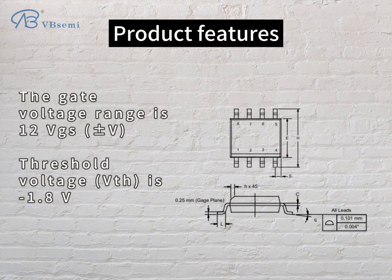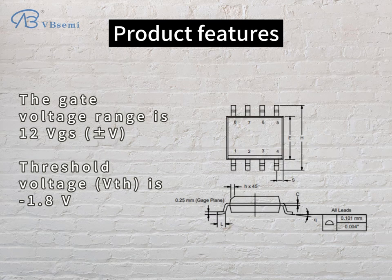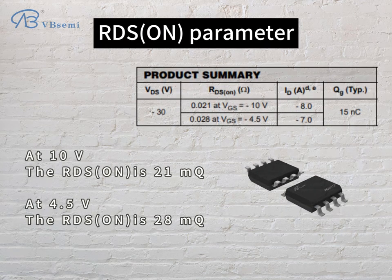The gate voltage range is ±12V. The threshold voltage VTH is -1.8V. For the RDS(on) parameter, at 10V the RDS(on) is 21mΩ, and at 4.5V the RDS(on) is 28mΩ.